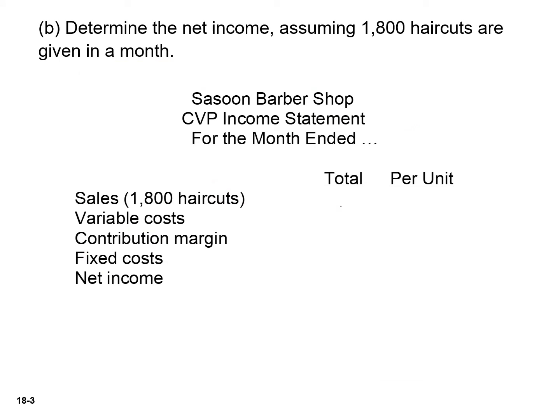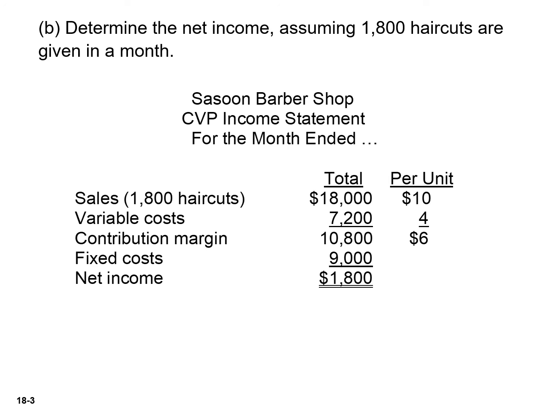The last thing that we have to do is determine net income, assuming we have 1,800 haircuts. We're going to take 1,800 and multiply that by the selling price that was given to us. We calculated our variable cost at $4, so our total variable costs are $7,200. Our contribution margin is simply the difference between our sales and our variable cost. We determined our fixed cost per month of $9,000, which means our net income is $1,800.